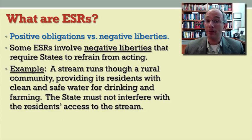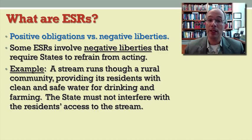Some economic and social rights involve negative liberties. For example, imagine a stream running through a rural community that provides its residents with clean and safe water, both for drinking and for farming purposes. The state must not interfere with the residents' access to the stream. In this instance, the state satisfies the obligation with respect to the right to water by refraining from action.